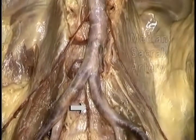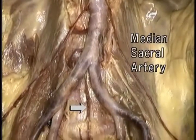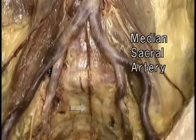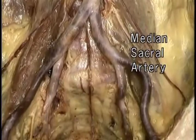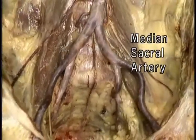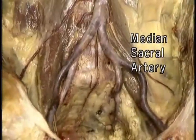Lastly, here's the median sacral artery, which arises from the back of the aorta just above the bifurcation, and passes down into the pelvis.